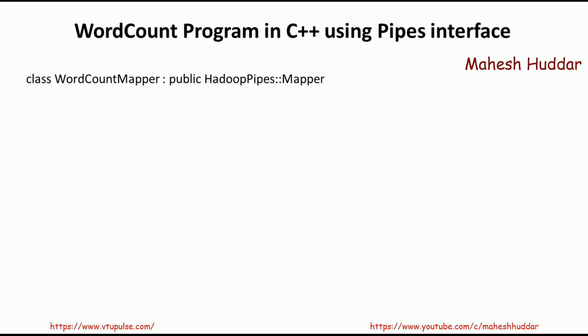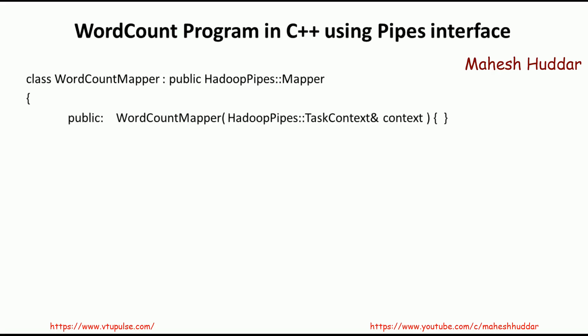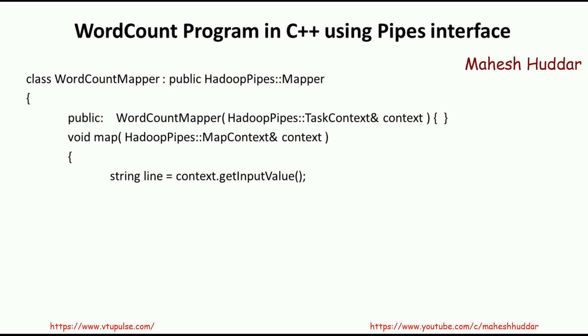Now, coming back to the mapper class — the name of the mapper class is WordCountMapper, which extends the Hadoop Pipes mapper class. This is the constructor which does not do anything; it is included as part of the mapper class but is not doing anything right now. The next part is the map function, which takes the input in the form of context. It reads the line of information from the context and puts it into a variable called line.